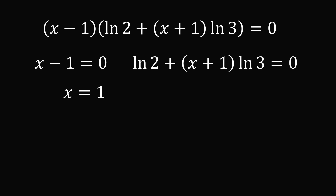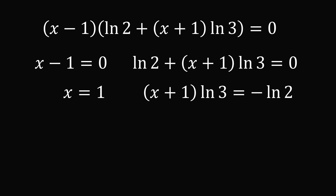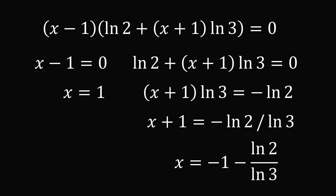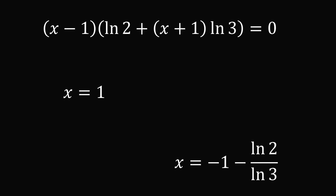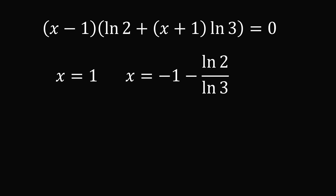All that remains is to solve this equation. Subtract ln 2 from both sides, then divide both sides by ln 3, then subtract 1 from both sides. We get x equals minus 1 minus ln 2 over ln 3. These are the two solutions: x equals 1, or x equals minus 1 minus ln 2 over ln 3, which is approximately minus 1.63. And that's the answer.